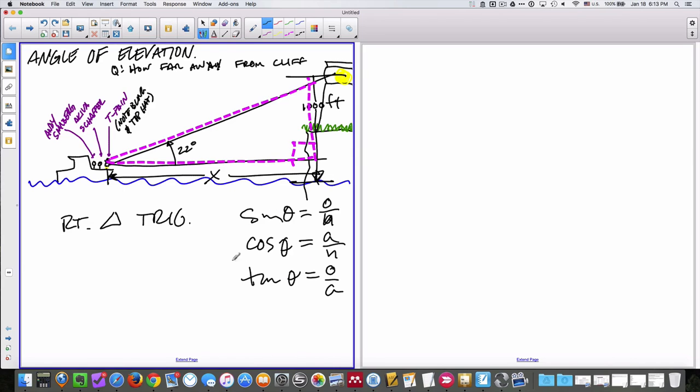So with right triangle trig, we would set up, we would choose the ratio that has both the opposite and the adjacent and an angle. Well, they all have an angle. This one has an opposite and adjacent, so we're really going to go with tangent. So we'd set up tangent of theta is equal to opposite over adjacent.